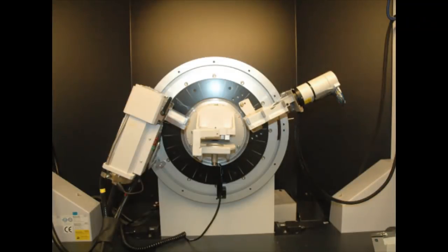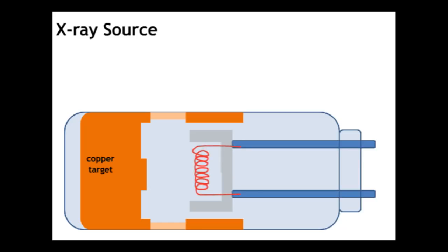The Bruker D8 Focus X-ray Spectrometer is used to measure the crystal structure of powders or thin film materials. The X-rays are produced in an evacuated tube similar to a cathode ray tube. An applied current heats up a tungsten filament which liberates electrons.